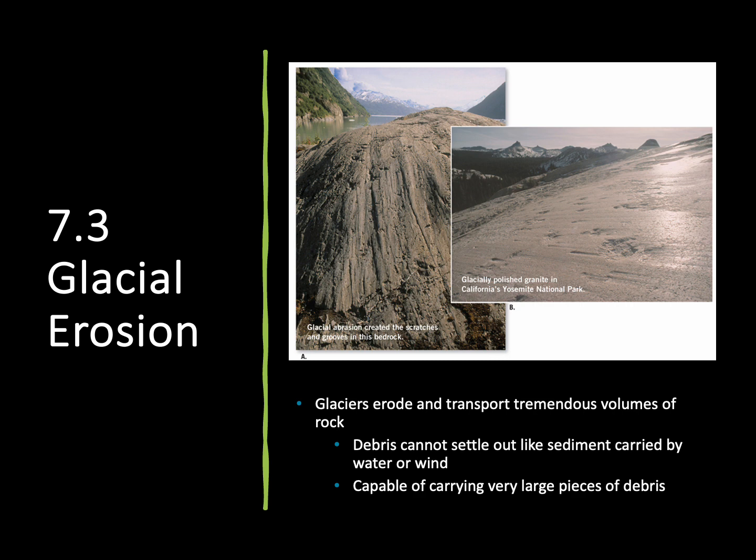We can also see that glaciers are capable of polishing solid rock. If we have really small pieces of sediment stuck in the bottom of the ice, when it flows over a surface, it's going to act like sandpaper to that rock — smoothing it down and polishing it off, like we see in this image here on the right.